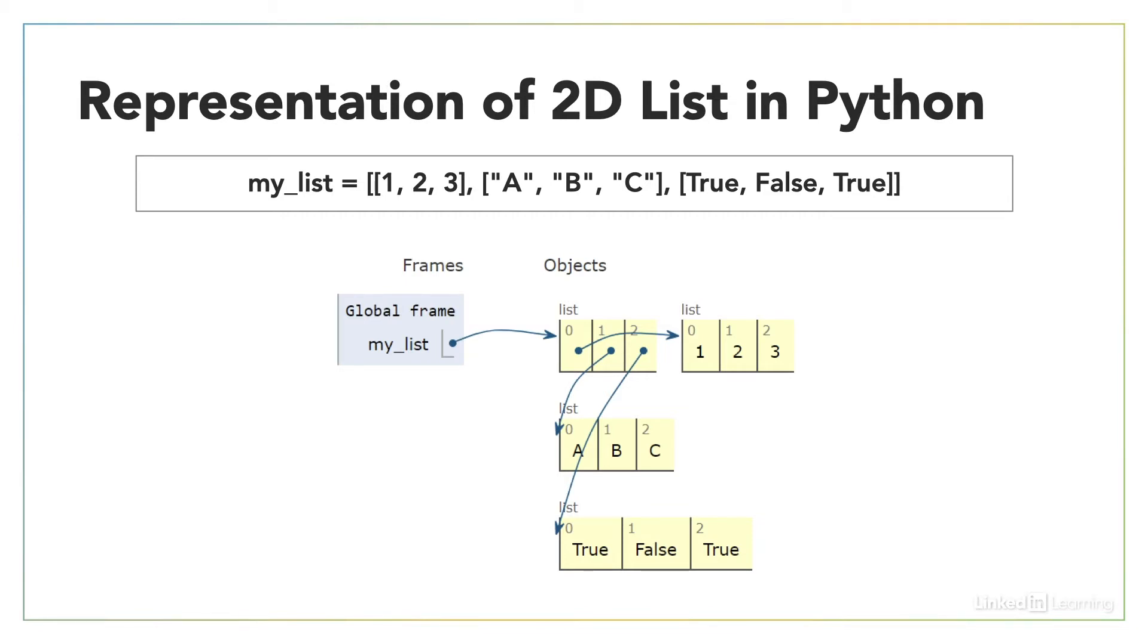So take a look at this. You can see that in the global frame, that means accessible to our whole program, we have MyList defined, which is pointing to a list which has three items. So that's indices 0, 1, 2, and 3.